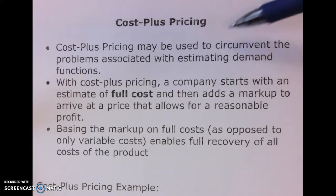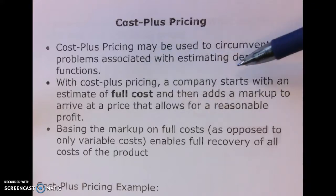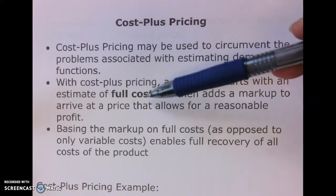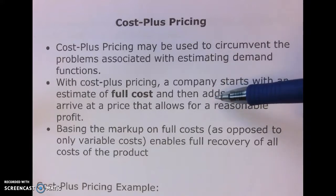Cost plus pricing could be used to get around problems with estimating demand functions — but yes and no, because you still have to estimate the markup. So it alleviates the problem but doesn't fully eliminate it. With cost plus pricing, the company starts with an estimate of full cost, which means variable cost plus fixed cost pushed down to the unit level, and then we add a markup.